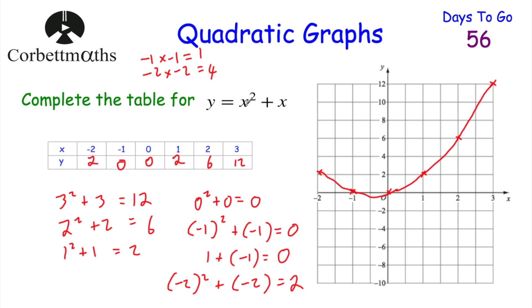In terms of the shapes of quadratic graphs: if you've got a positive x squared, you get a U-shaped parabola. If it's minus x squared, you get an N-shaped parabola. That's the name — parabola — and it's either U-shaped or N-shaped depending on the sign of x squared.